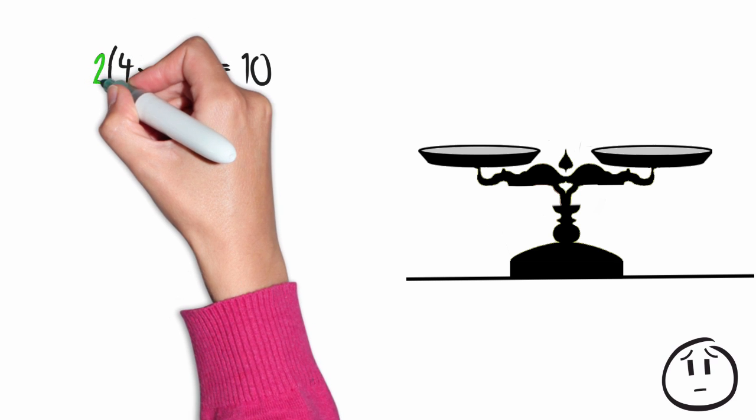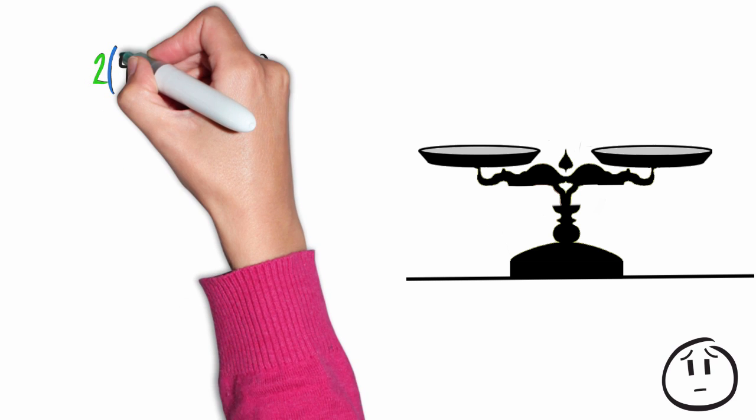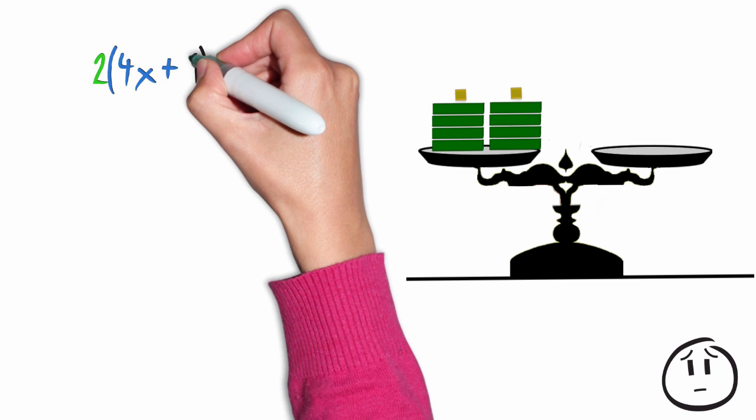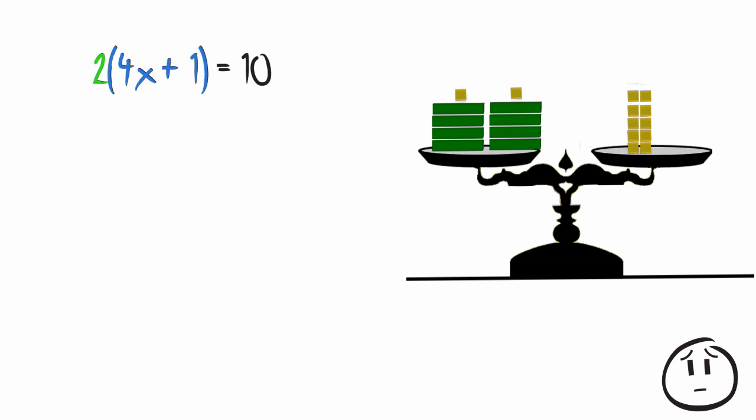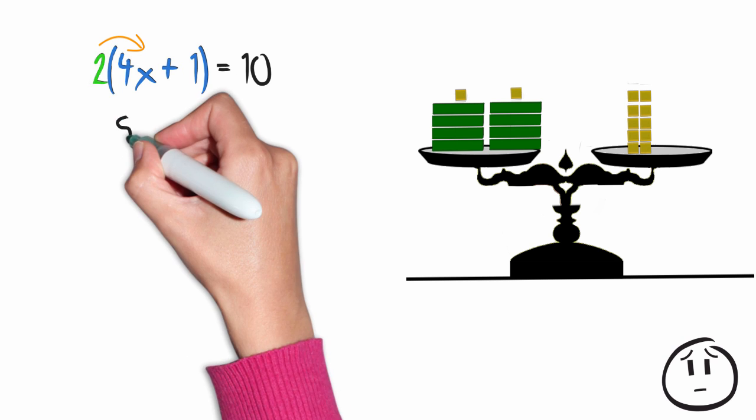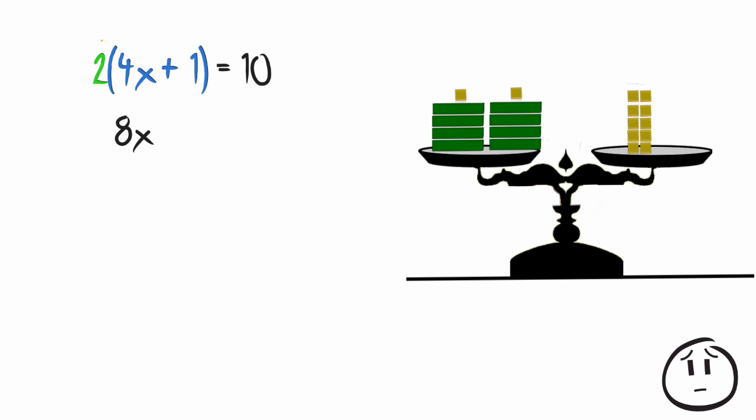The 2 in front of the quantity 4x plus 1 says that I have 4x plus 1 two times. On paper what I do is I apply the distributive property and multiply each term in the parentheses by 2. 2 times 4x is 8x and 2 times 1 is 2.